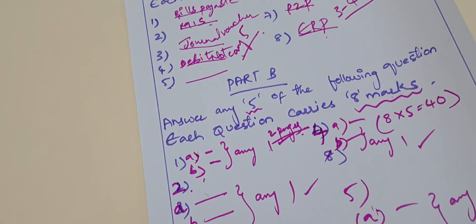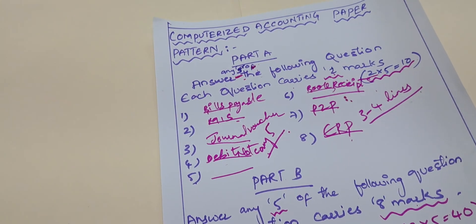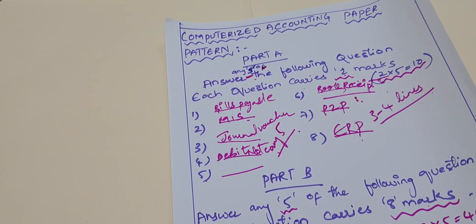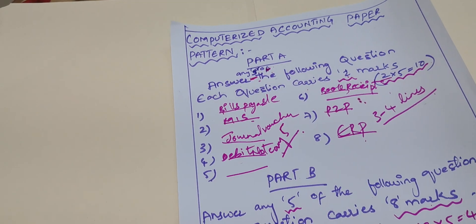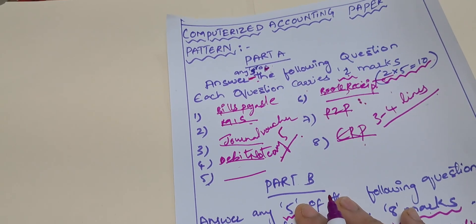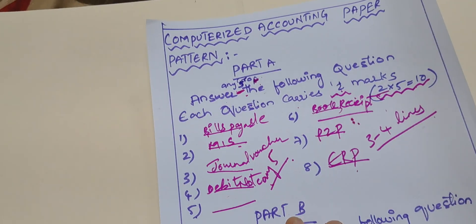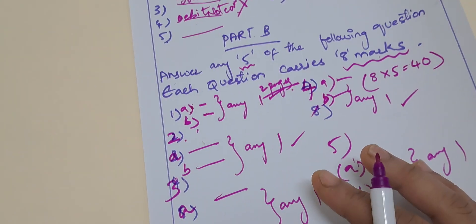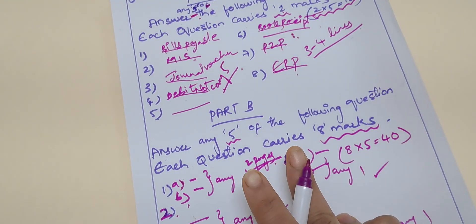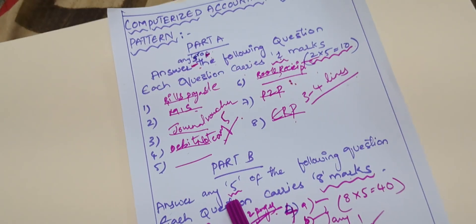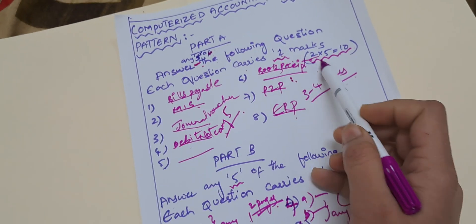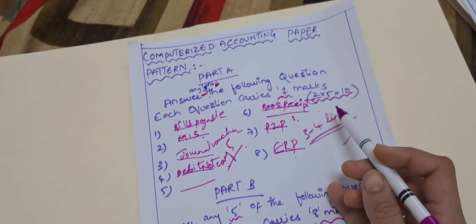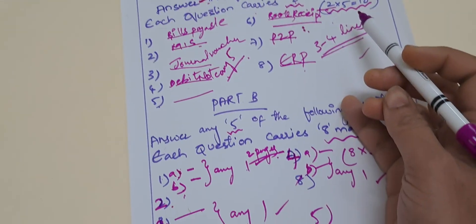So this is your question paper pattern for computerized accounting, which I have explained in detail. I hope it is very helpful for you. For the 8-mark answers, write only two pages — meaningful content only. For the two-mark answers, two to three or four lines is fine. Manage your time well in computerized accounting; prepare well.